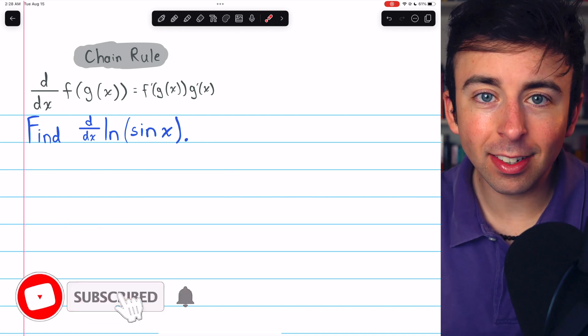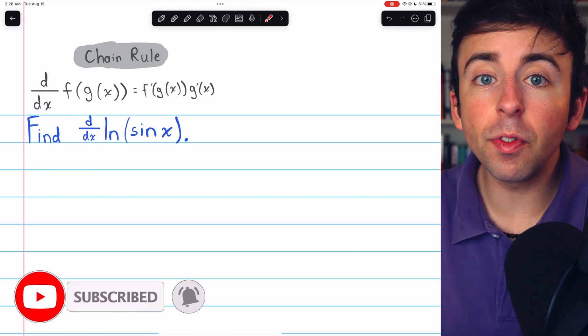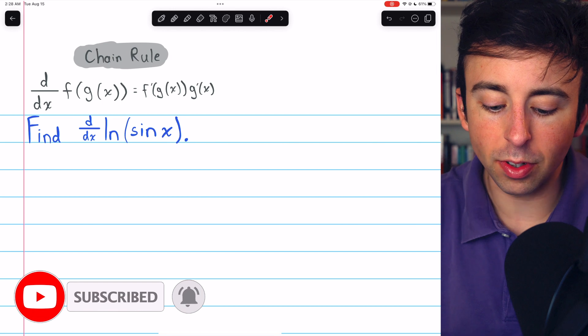The natural log of sine x is a composite function, so to find its derivative, we'll have to use the chain rule.